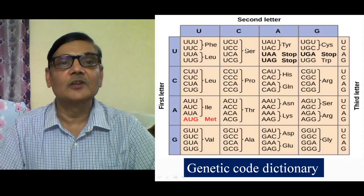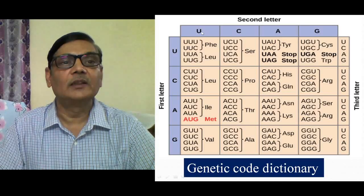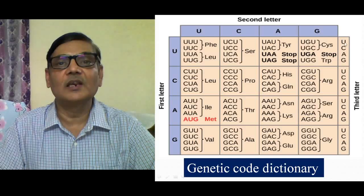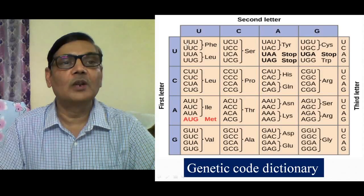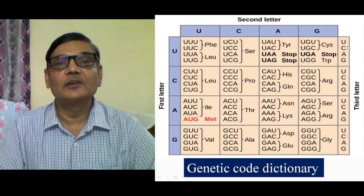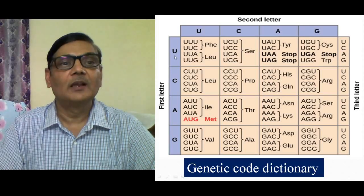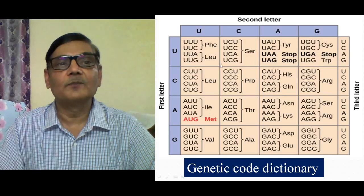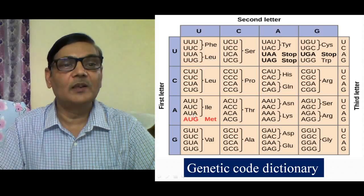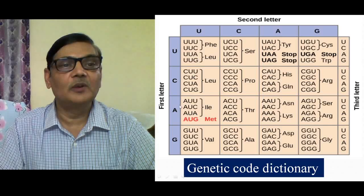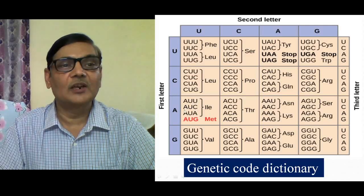For example, first letter U, second letter U, and third letter U from the right side makes the codon UUU. The second codon is UUC, then UUA, and UUG. In the same way, for another group, the first letter A, second letter U, and third letter U makes the codon AUU, and AUC is the second codon possible there. This is the way all 64 codons are decided.